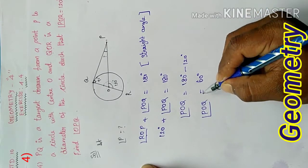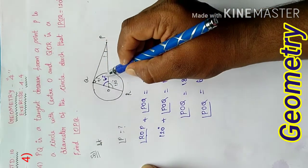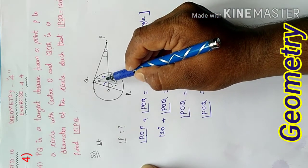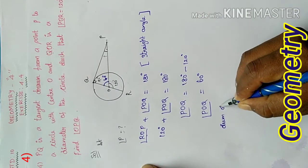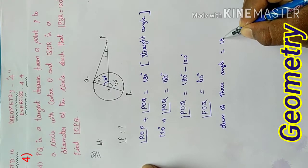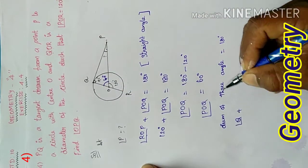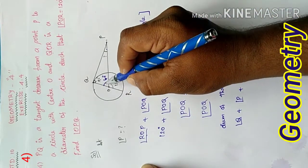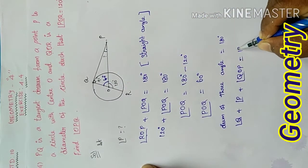This central angle equals 60 degrees. Now, in triangle OPQ, the sum of three angles equals 180 degrees. So, angle Q plus angle P plus angle O in triangle OPQ equals 180.